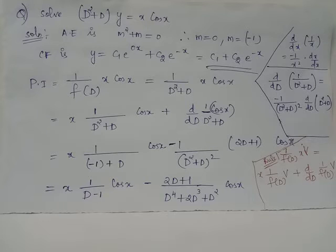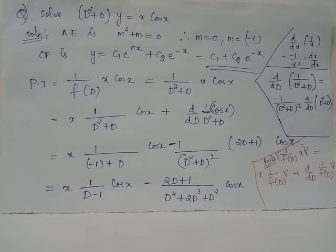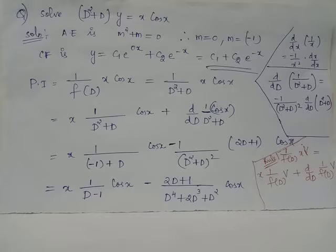The auxiliary equation is m² + m = 0. The left-hand side can be written as m(m + 1). Therefore, the auxiliary equation has roots m1 = 0 and m2 = -1.